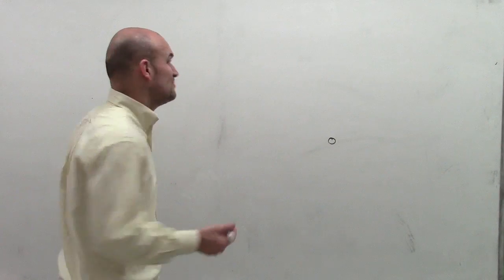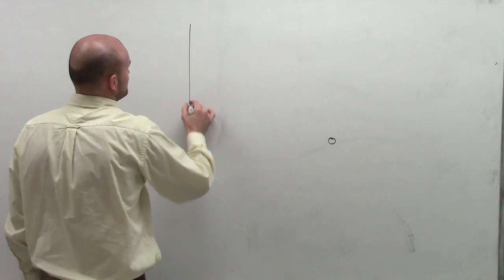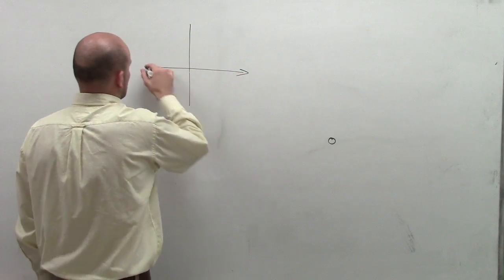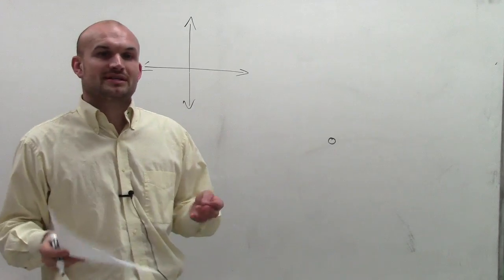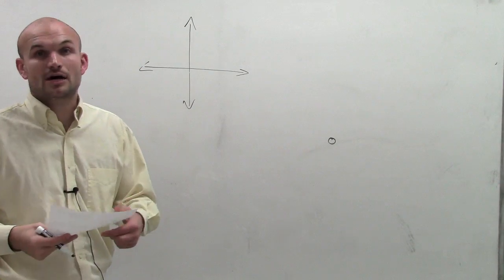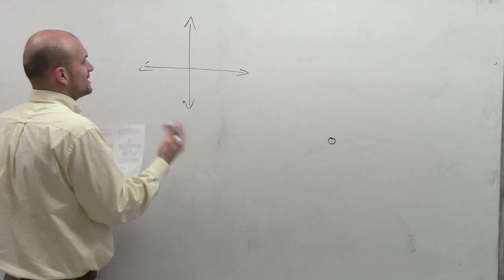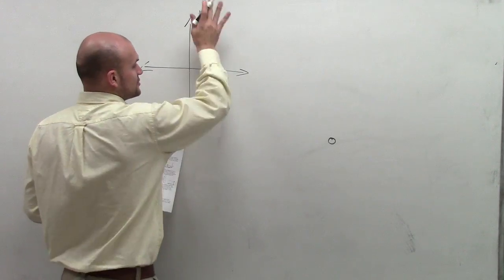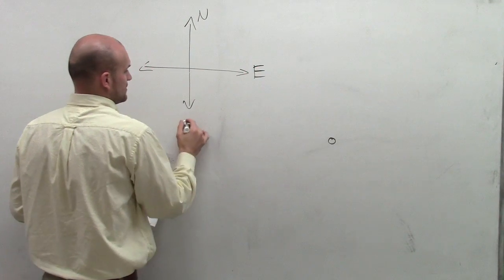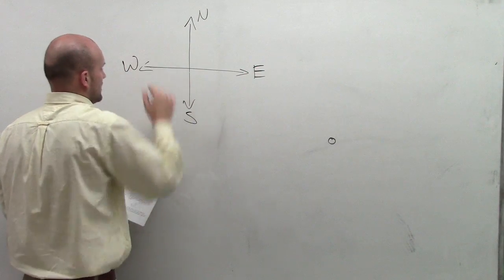Now the next thing is you need to understand our bearings. So when looking at bearings, a bearing is just a way for us to be able to kind of use direction with north, east, south, west, and to really identify a standard form. So we're going to have north is always going to be due up, then we'll have east, south, and west.